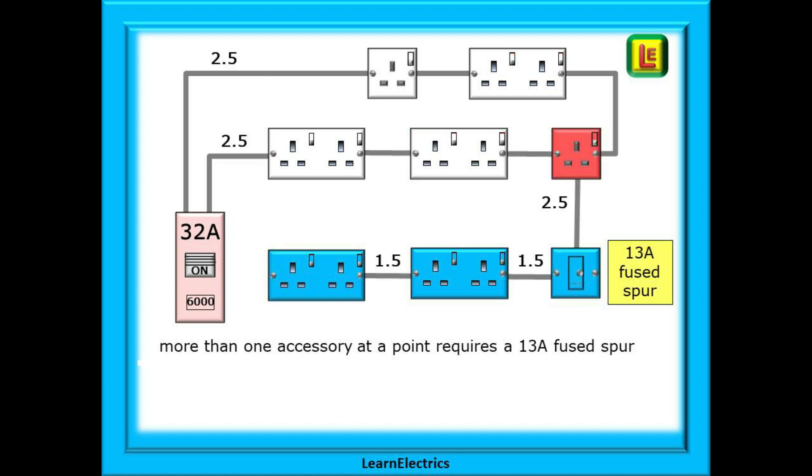If we want two accessories, two double sockets in this case, then we must do this through a 13 amp fused spur or fused connection unit as it is properly called. Now we can add as many accessories as we like downstream of the FCU and reduce the cable size to 1.5 millimeters if we wish as we cannot now exceed 13 amps in that leg.